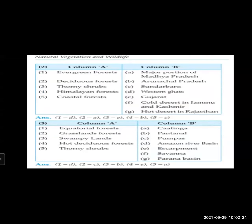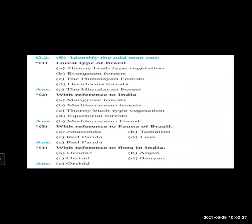Textbook question — Identify the odd man out. Forest type of Brazil: A. Thorny bush type vegetation, B. Evergreen forest, C. Himalayan forest, D. Deciduous forest. The odd man out is C — Himalayan forest, because Himalayan forest is not found in Brazil.